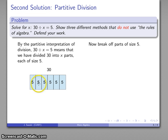Now I've taken my 30, divided it into a number of pieces each of size 5. My interpretation of partitive division is that the number of pieces is the divisor. I've divided this into one, two, three, four, five, six pieces, so x must equal 6.